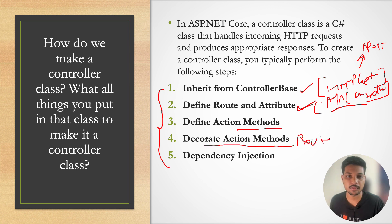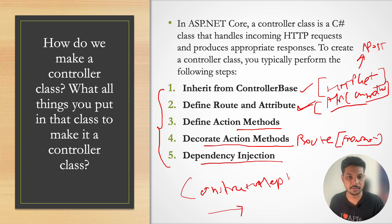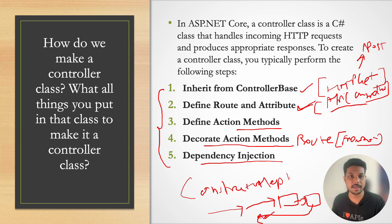You define your action methods and decorate them with route attributes and [FromBody] as needed. For dependency injection, if you want to interact with a service layer or external systems or cloud services, use constructor dependency injection. Controller classes should be very light — they should receive the HTTP request from the client, forward it to the service layer, get back the response, and send it back to the user. Keep controller classes as lean as possible.